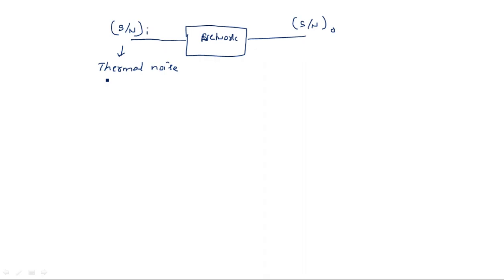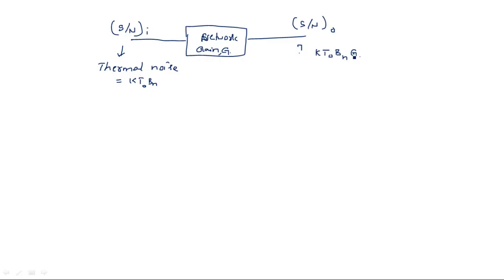Thermal noise is proportional to temperature and bandwidth of the network. The noise bandwidth — thermal noise equals K·T·B_N. At room temperature we take it as K·T₀·B_N, and since the network has a gain G, when this thermal noise passes through the network the output noise will be K·T₀·B_N·G.